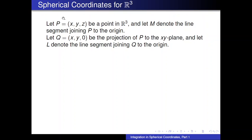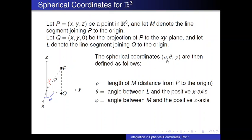With this setup, we define spherical coordinates for point P using three Greek letters: rho (ρ), theta (θ), and phi (φ). Rho will be the length of M — that is, the distance from P to the origin. Think of it as a radius in space, playing the analogous role that r played in polar coordinates.